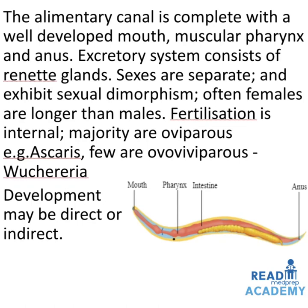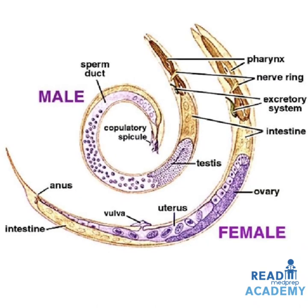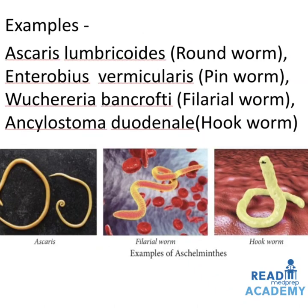In the image on the right side you can see the digestive system of the roundworm: the mouth, pharynx, intestine, and anus. In this image you can see the male and female worm of Ascaris. The worms have the pharynx, nerve rings, excretory system, and intestines. In the female: ovary, uterus, vulva; the intestine and anus are common. In the male: testis, sperm duct, and copulatory spicules. Examples: Ascaris lumbricoides (roundworm), Enterobius vermicularis (pinworm), Wuchereria bancrofti (filarial worm), Ancylostoma duodenale (hookworm). In the images you can see Ascaris, Wuchereria (filarial worm), and Ancylostoma duodenale (hookworm).